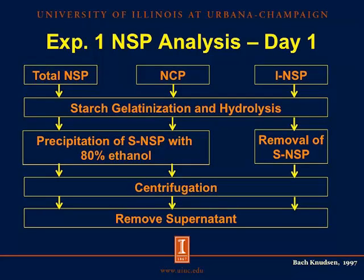The NSP analysis is a three-day procedure with three parallel runs: a run on the left for total NSP, one in the middle for non-cellulosic polysaccharides, and one on the right for insoluble non-starch polysaccharides. The first step for all three is starch gelatinization and hydrolysis, identical to the starch procedure described previously. After that, for total NSP and the non-cellulosic polysaccharide procedure, you precipitate the soluble NSP with 80% ethanol to account for soluble NSP, whereas in the insoluble NSP procedure, you remove soluble NSP with a neutral phosphate buffer. After centrifugation and removal of the supernatant — which contains starch, low molecular weight carbohydrates like sucrose and lactose, and oligosaccharides like raffinose and stachyose — you're left with a fiber residue at the end of day one.